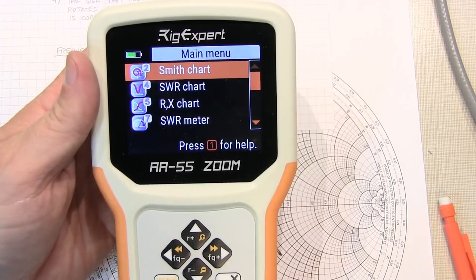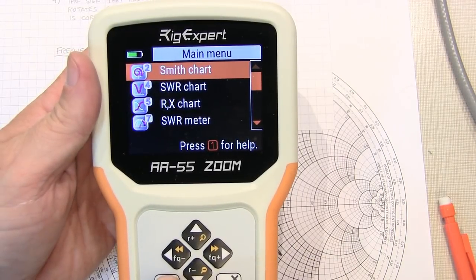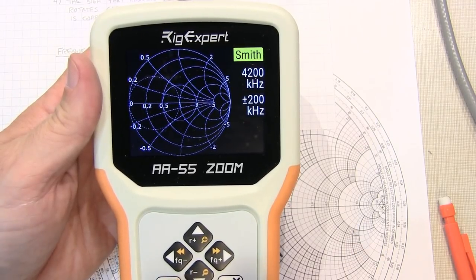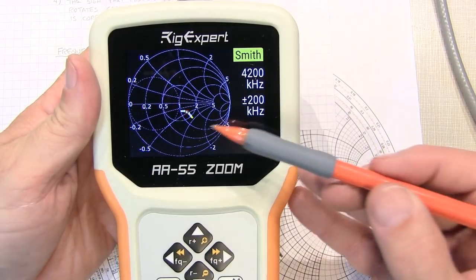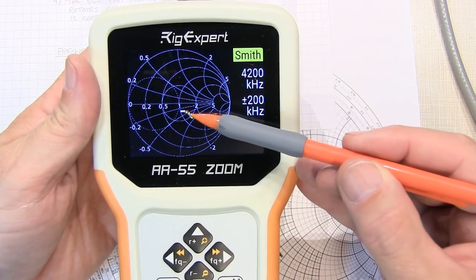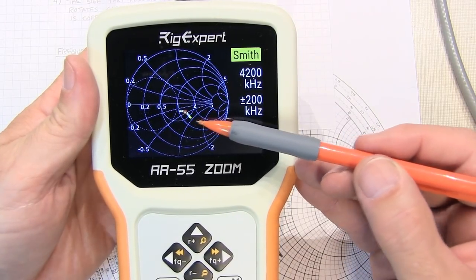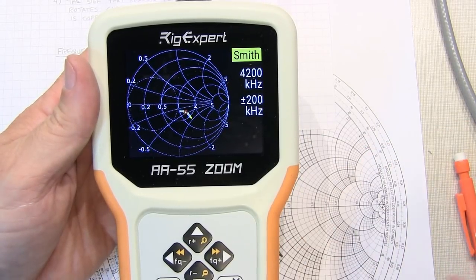And just to be sure we've got it right, we'll plot the Smith chart here on my Rig Expert antenna analyzer. This one will actually show us the curve. And indeed, the Smith chart is showing that our curve is here on the capacitive side, and the X component is indeed capacitive.